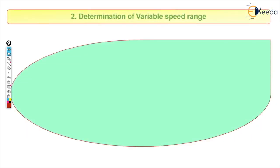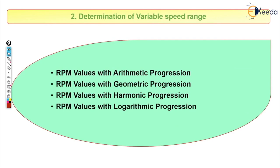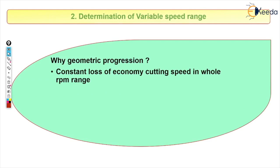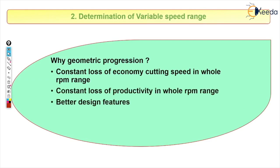Now, how do we determine the variable speed range? There are four progressions in our syllabus: arithmetic progression, geometric progression, logarithmic progression, and harmonic progression. Through these progressions we can decide which speed should be selected for each gear. Out of all four types, we use geometric progression. There are three main reasons for choosing geometric progression.